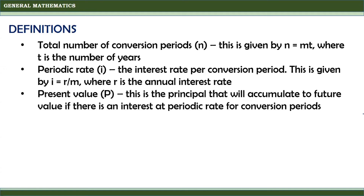Present value, represented by P, is the principal that will accumulate to future value if there is an interest at periodic rate for a number of conversion periods.